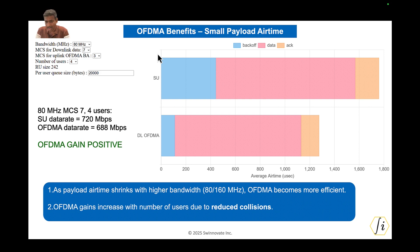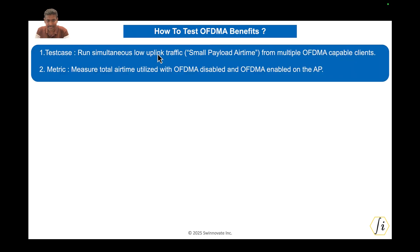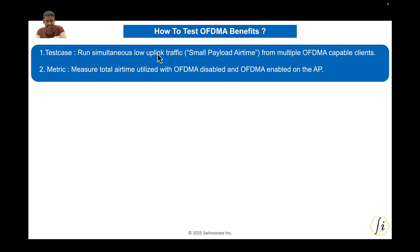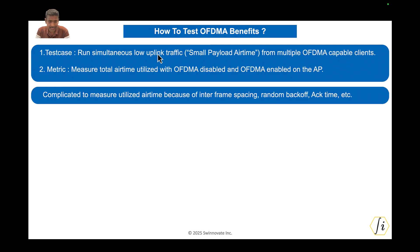Let's look at the practical challenges of demonstrating the air time advantage of OFDMA. The test case should be simultaneous uplink traffic from multiple clients in the small payload air time scenario — low uplink traffic with multiple OFDMA capable clients connected to the AP. The metric should be the total air time utilized, comparing OFDMA disabled versus OFDMA enabled on the AP. Hopefully we have a knob on the AP to enable or disable OFDMA. However, it is complicated to measure utilized air time because of all the interframe spacing, random backoff, ACK time, and so on.